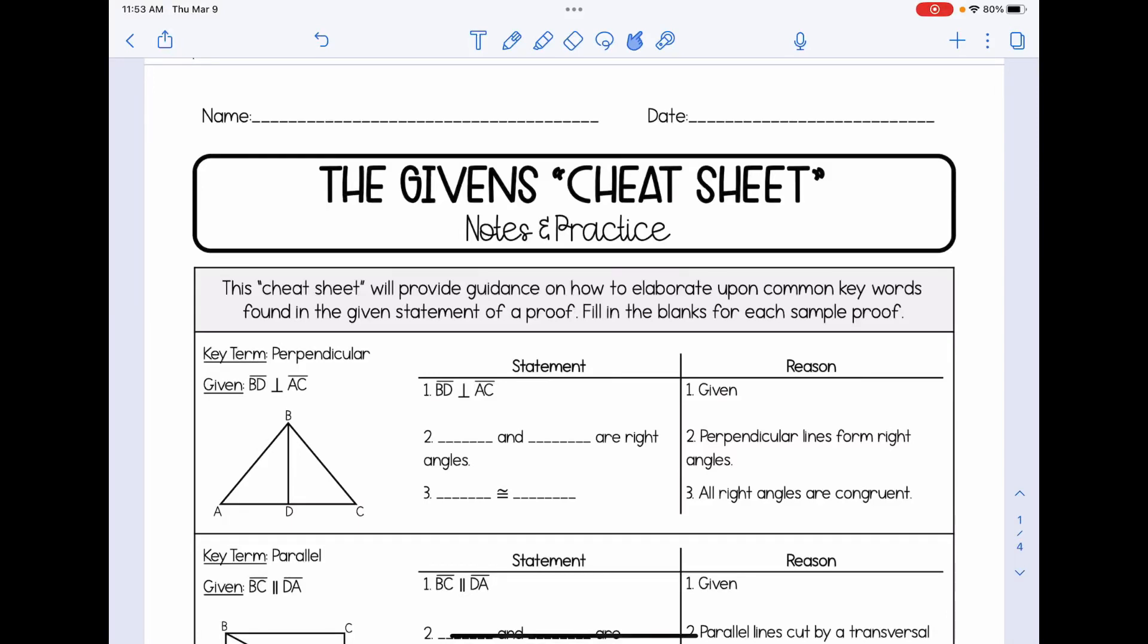In this video, we're going to learn a little bit about two column proofs and the given statements that are provided to us with each proof. We're going to take a look at this cheat sheet. This cheat sheet will provide guidance on how to elaborate upon common keywords found in the given statement of a proof. And for each of the examples, we're going to fill in the blanks for each sample proof.